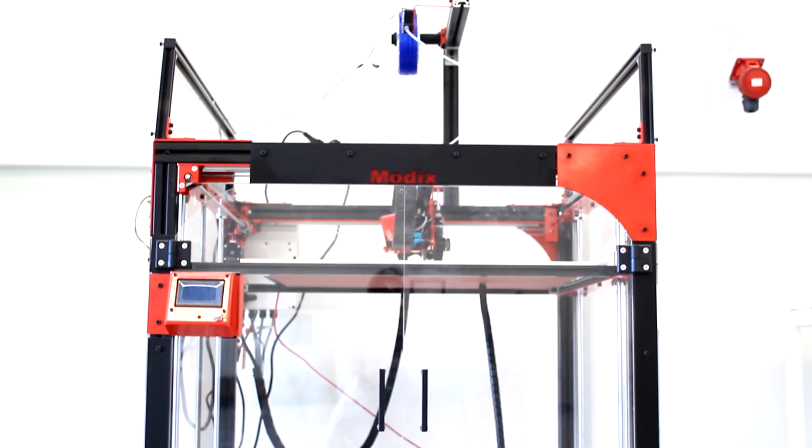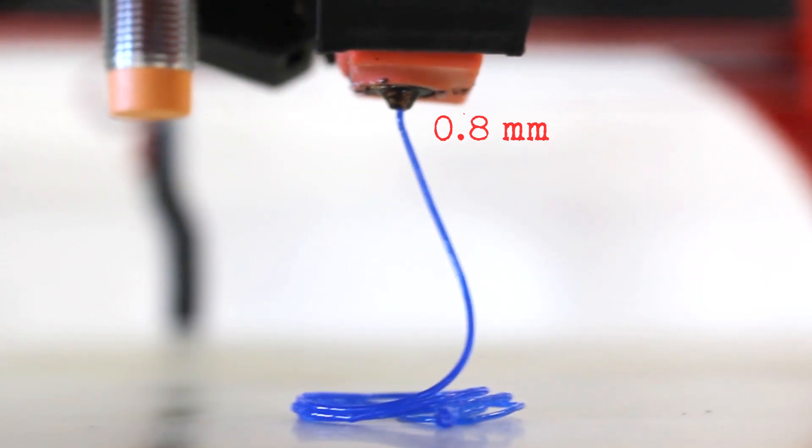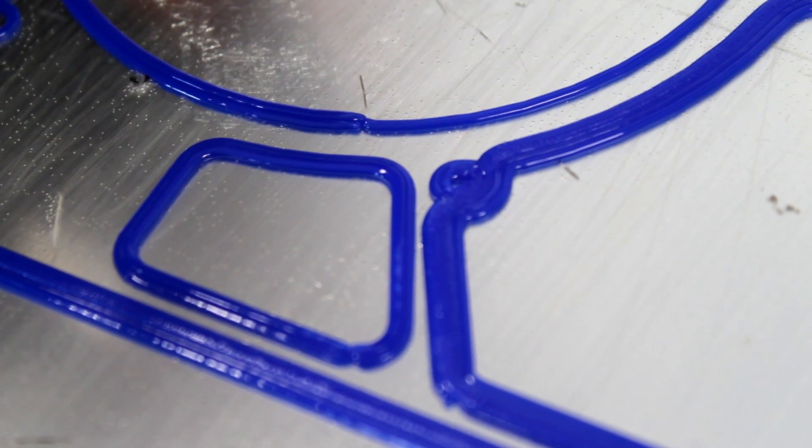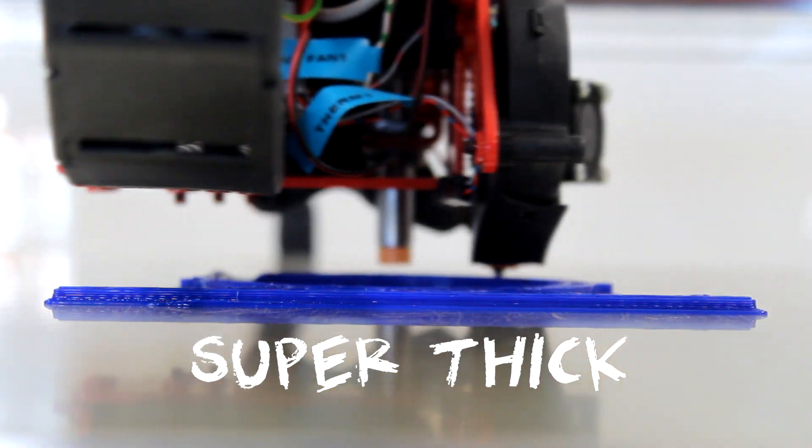With the rotor ready, I could now print everything else. To print the casing, I chose my big girl Claudette, with her big nozzle of 0.8mm in diameter. Look at those lines. Thicc. With this bad girl, I can print in half a millimeter layers. Super thicc.